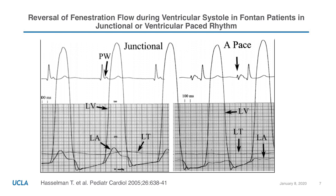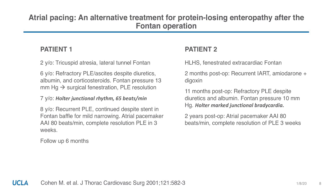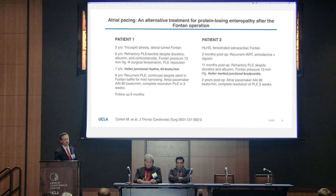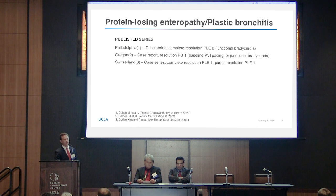There's a reversal of the pressure gradient between the pulmonary venous atrium and the Fontan circulation during systole, and Fontan pressures tend to be higher. When you pace the patients, the forward flow is re-established and the Fontan pressures go down. Clinically, we see this being relevant in patients with PLE and other forms of Fontan failure, where significant sinus node dysfunction manifesting as junctional bradycardia can be a treatable target. After conventional therapy fails, there are nice studies from Mitch Cohen and colleagues from 2001 showing reversal of PLE with atrial pacing, and that has been shown in other case series and case reports since then.